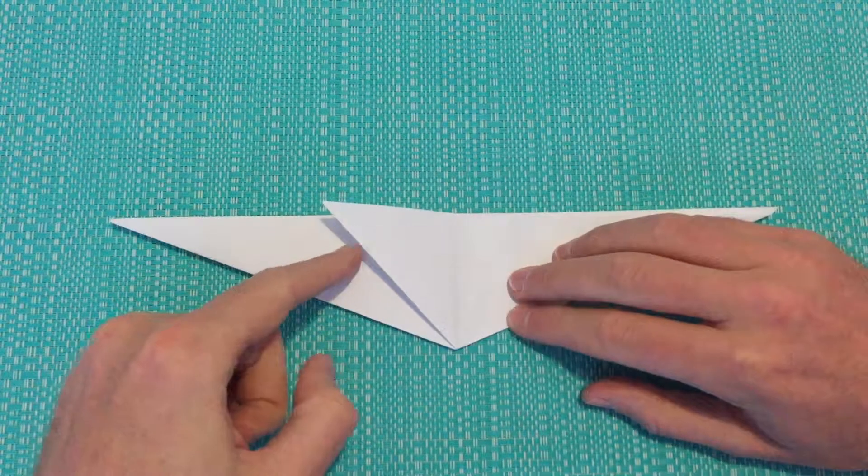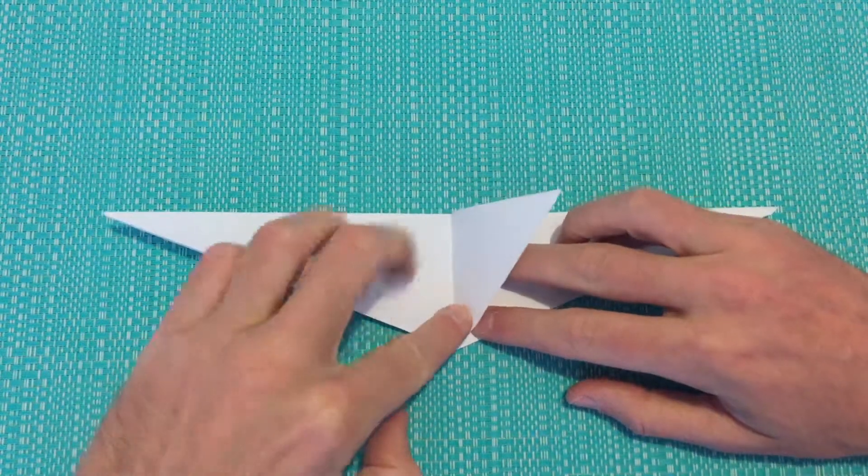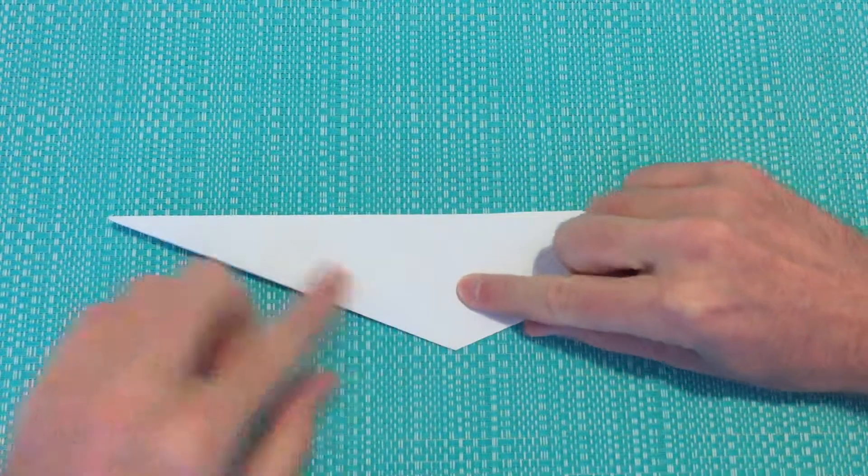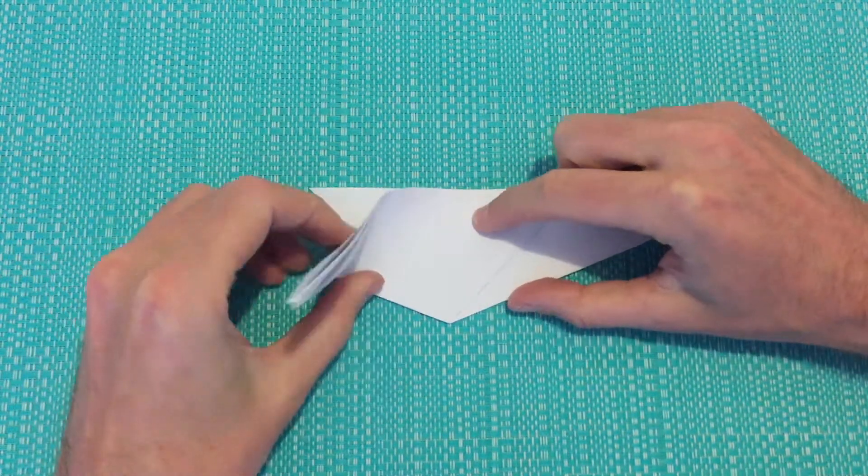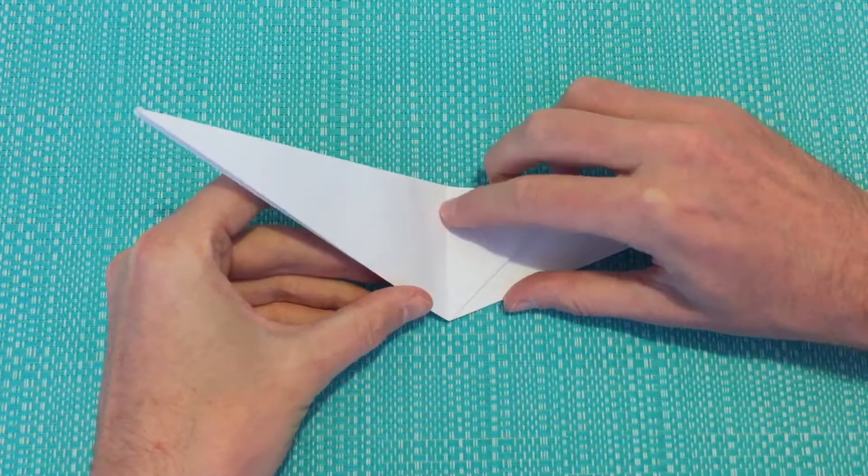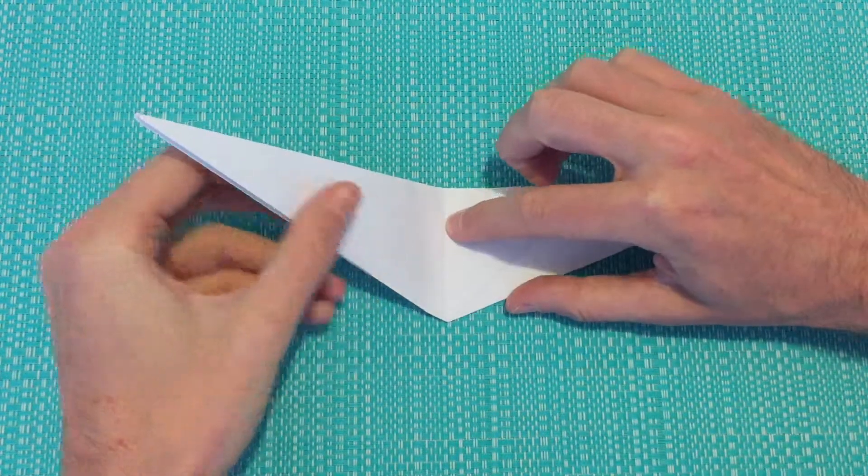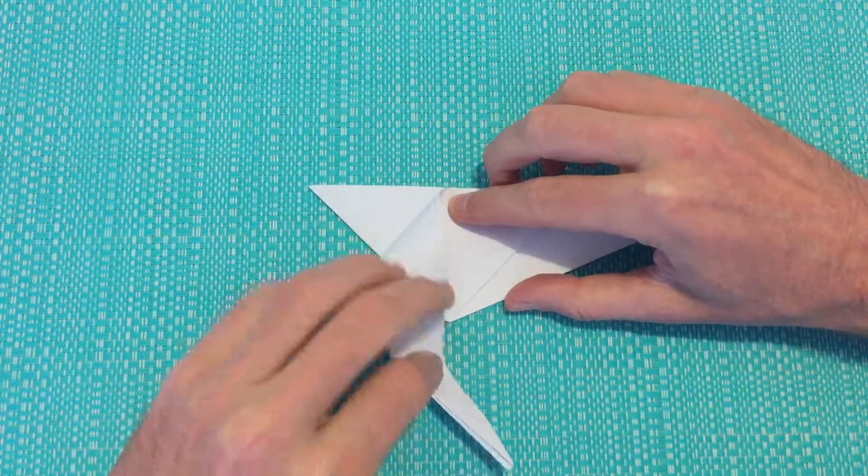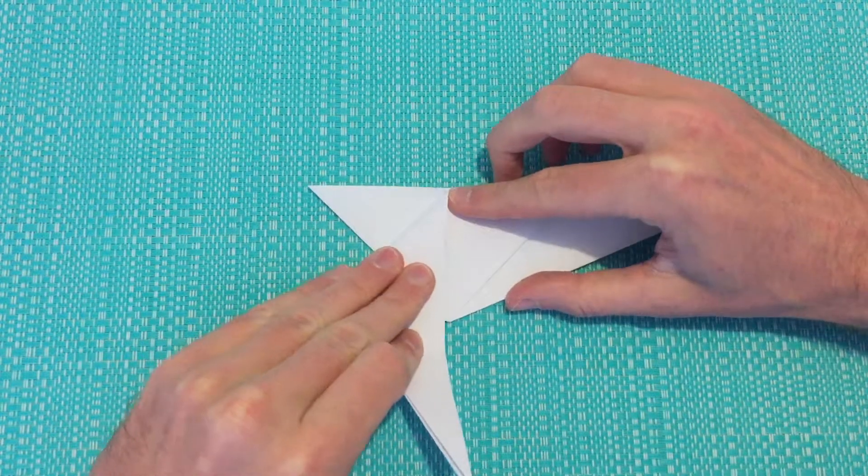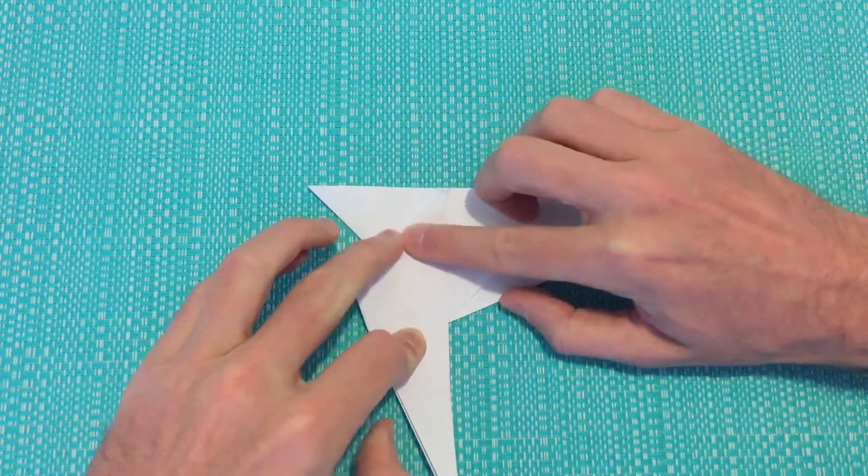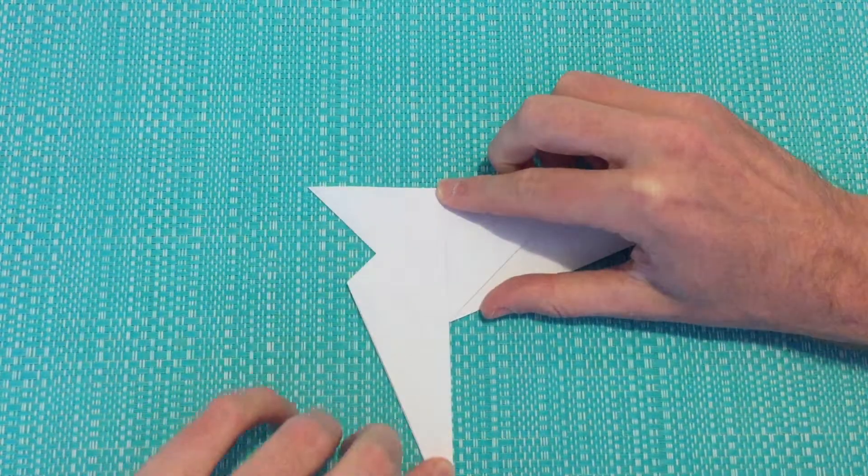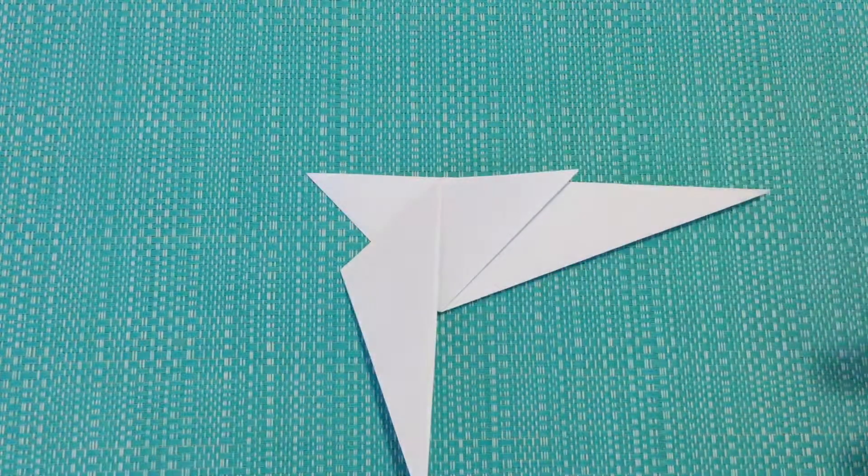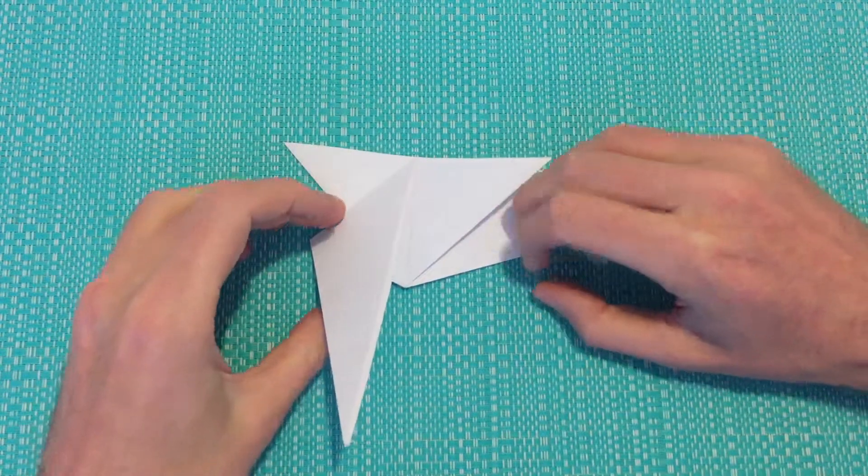So next we'll lift this flap that's in the middle and we'll just fold it off to the right hand side for now. We'll take our left edge, fold it down, just using that existing center line here as a guide for the fold. Putting a nice firm crease. And then we'll open that up.